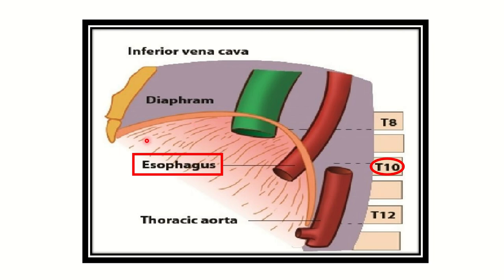Here in this picture we can see a cut section of the diaphragm with some important structures passing through it. First, the inferior vena cava passes through the central part of the diaphragm at vertebral level Thoracic 8. The esophagus passes at Thoracic 10 vertebral level. The thoracic aorta, when it enters the abdomen becoming the abdominal aorta, crosses at the level of T12.